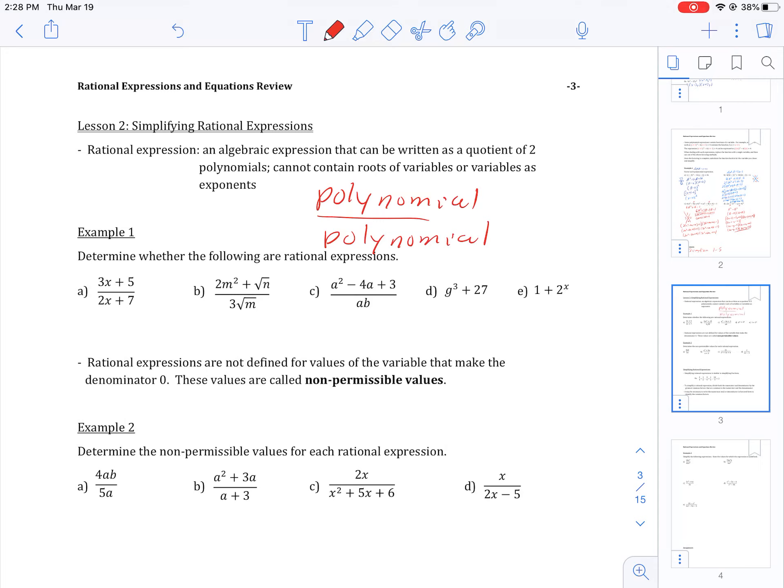For example one, determine if the following are rational expressions. This top numerator is a polynomial and the denominator is a polynomial, so I'm going to say yes for that one.